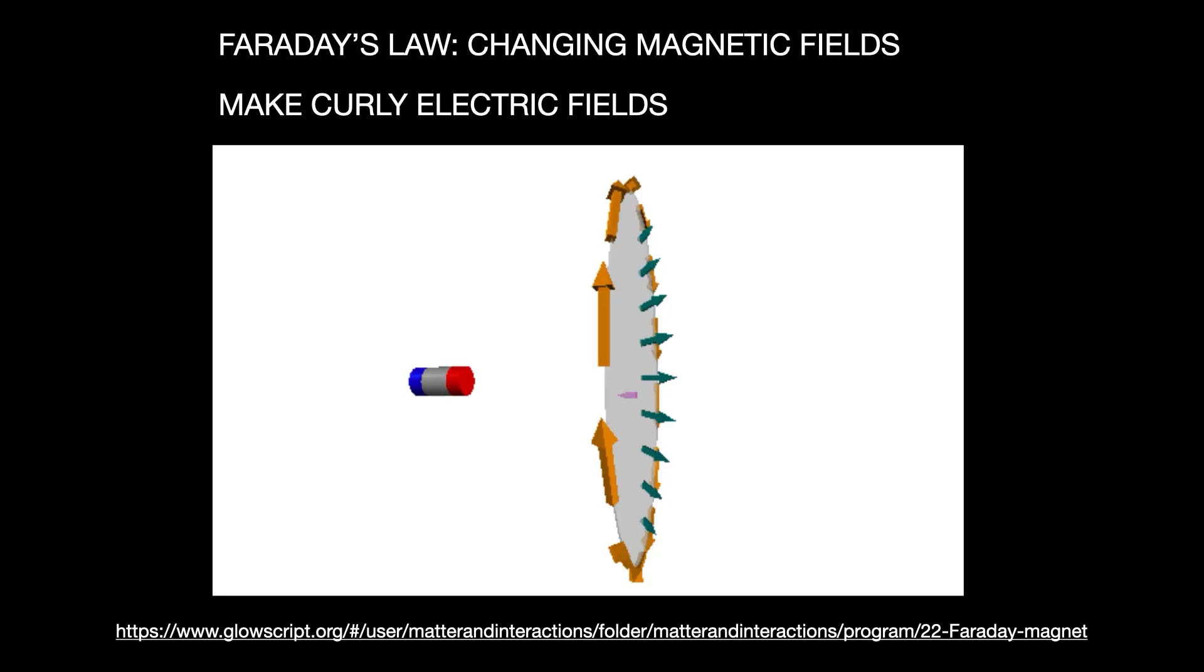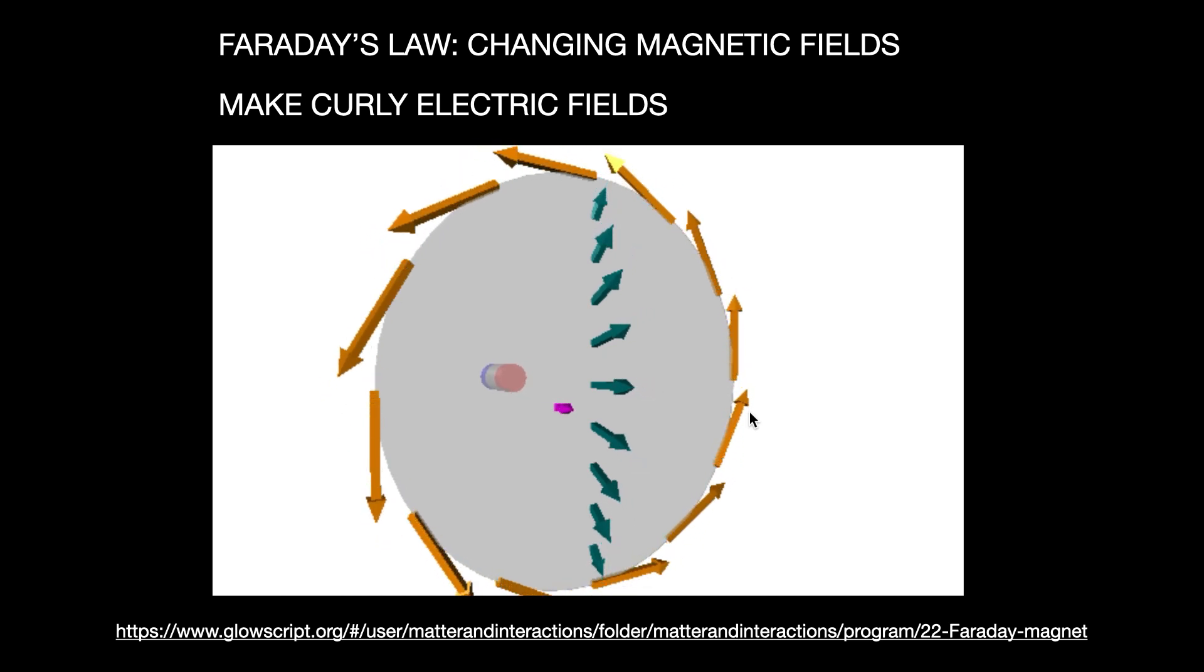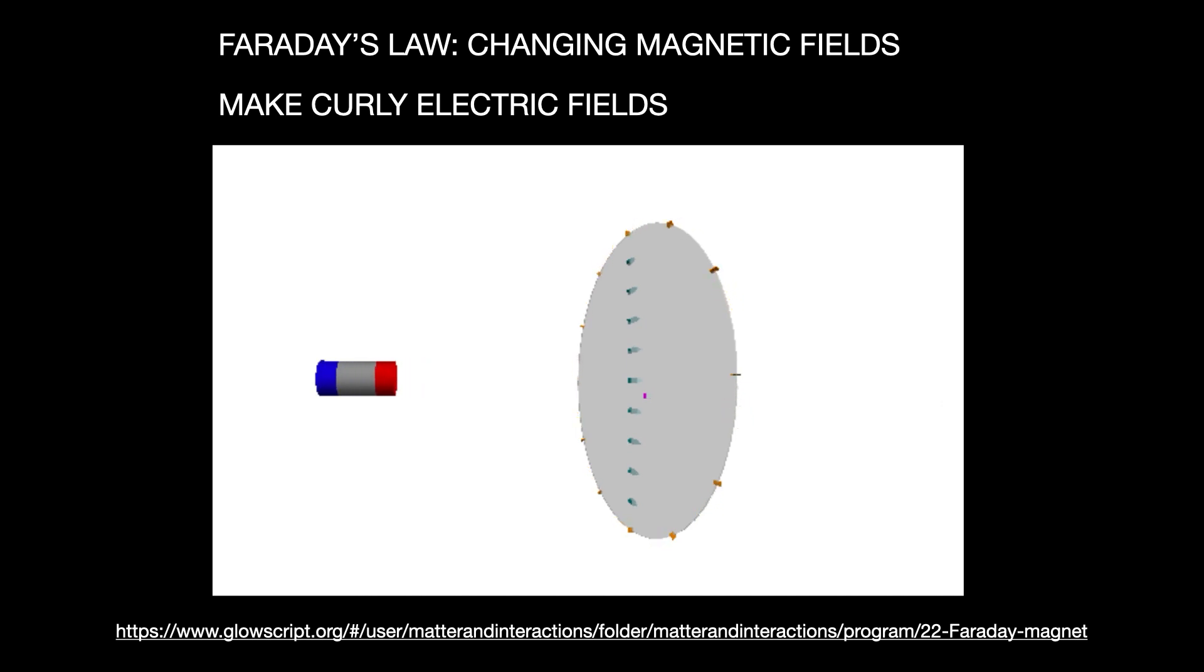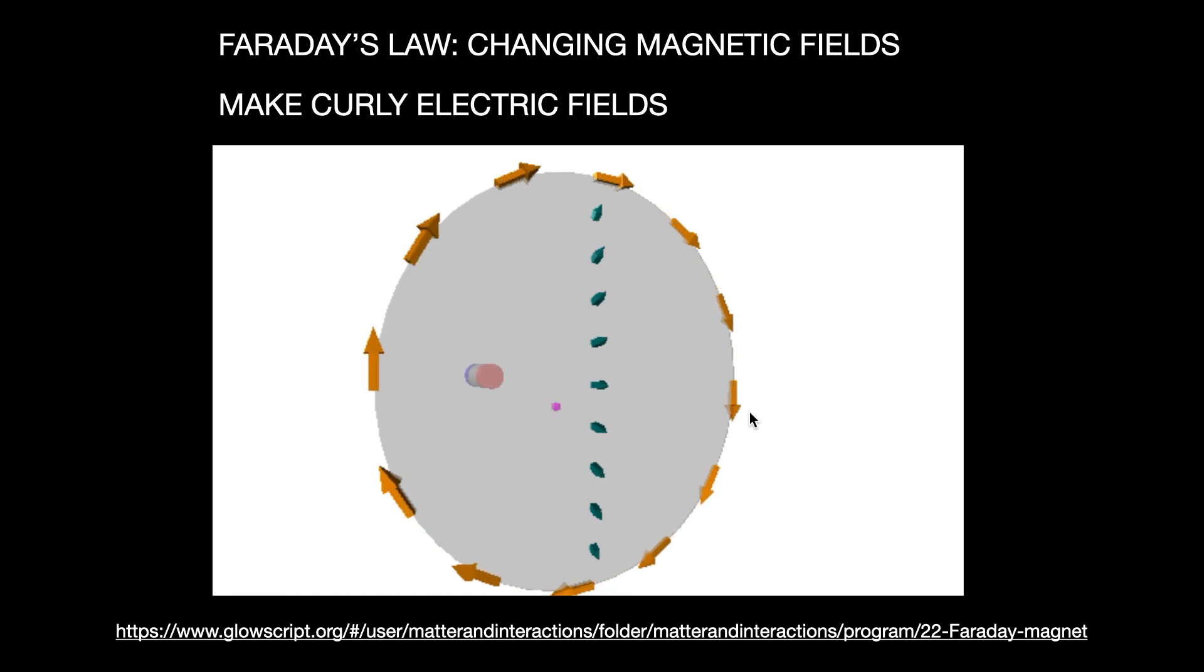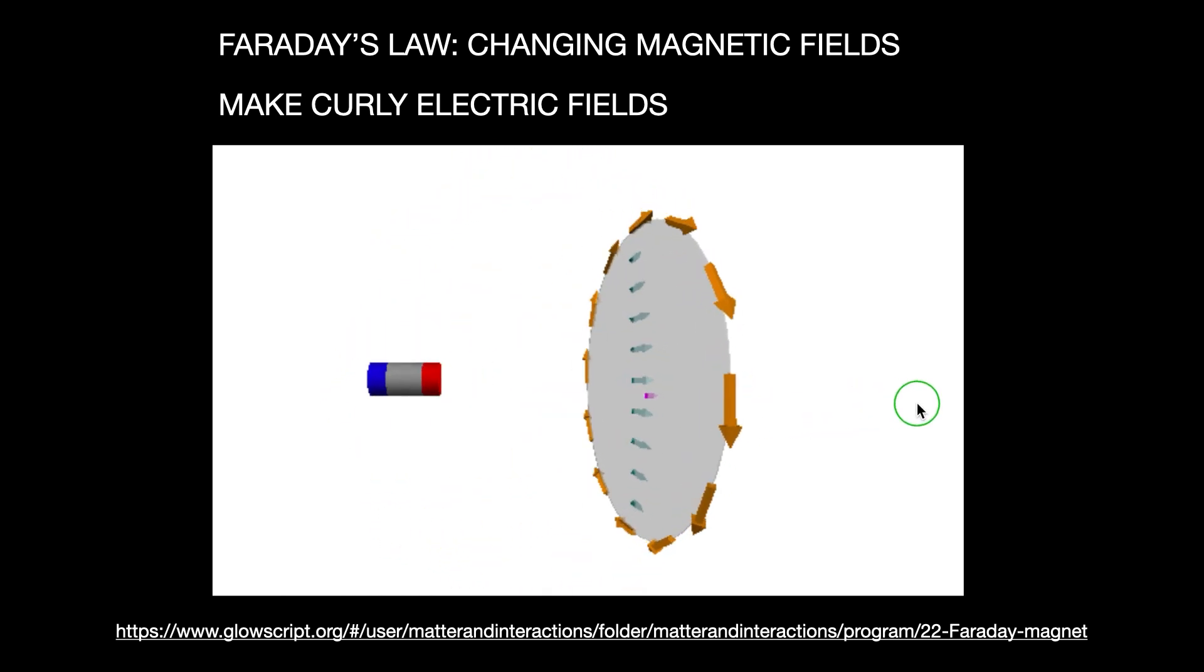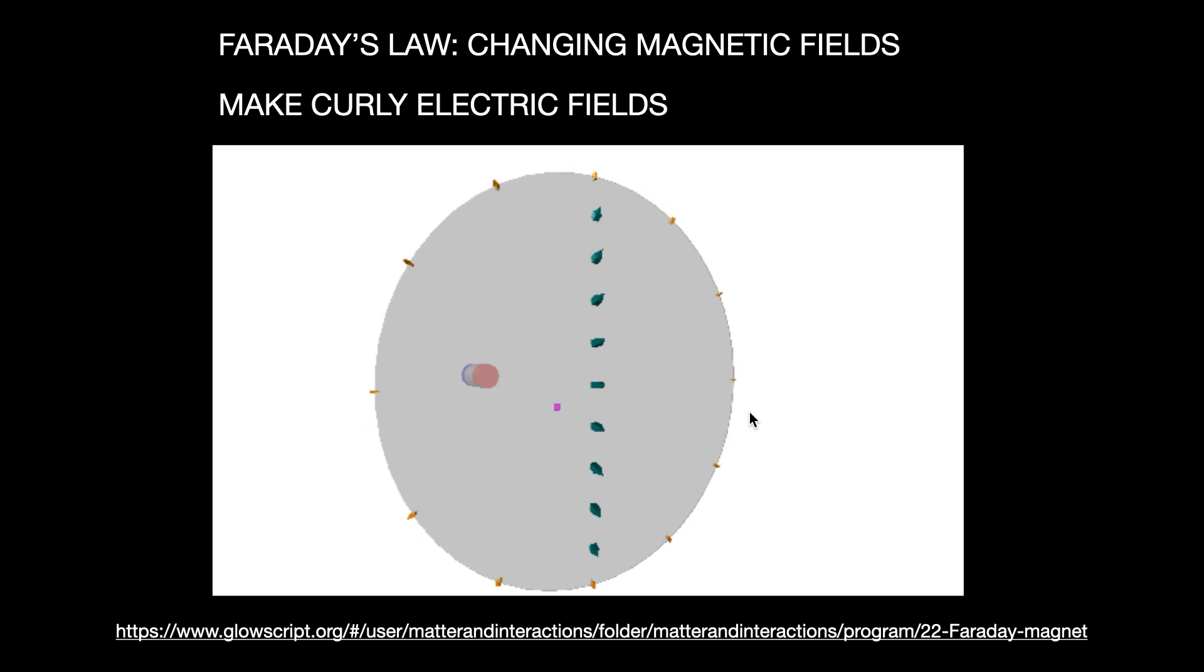Let's look at another demo. I didn't make this demo, but this is from the links on GlowScript.org. This is an animation of a magnet, the red part is the North Pole. And then we have some area near it. The green arrows show the direction of the magnetic field. As I move that magnet towards the area, the magnetic field changes. When the magnetic field changes, it creates these yellow arrows, which are electric fields. And these are curly electric fields. So changing magnetic fields make curly electric fields. That's kind of cool. Because you can actually get curly electric fields from a changing magnetic field.